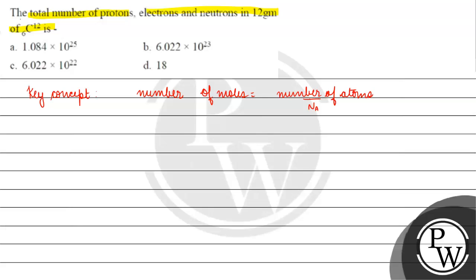Now, if we talk about number of moles, we can calculate it in another form. What is it? Moles equals mass divided by atomic mass.